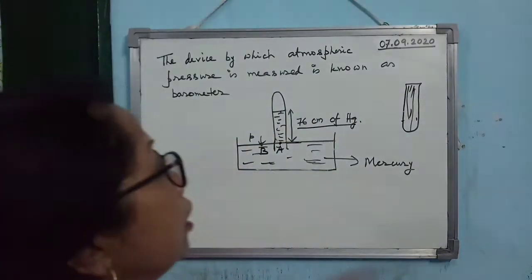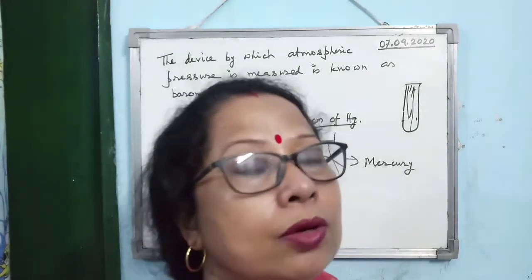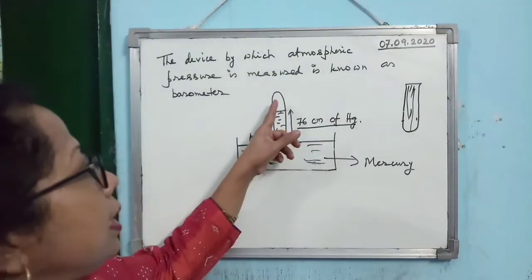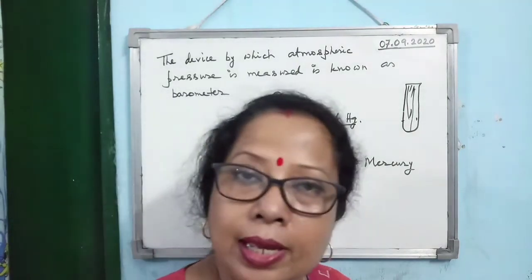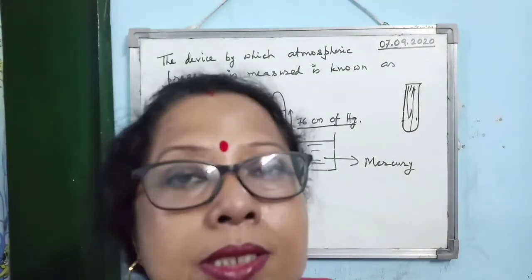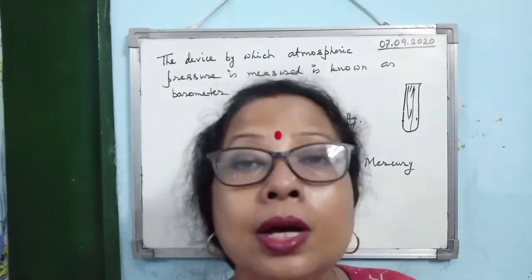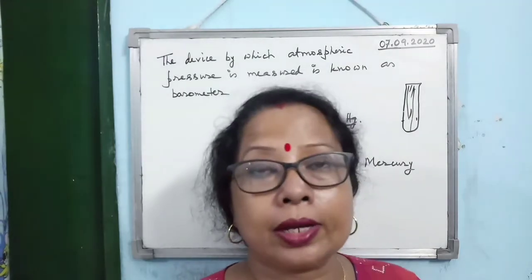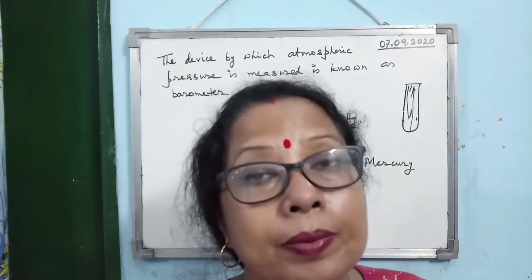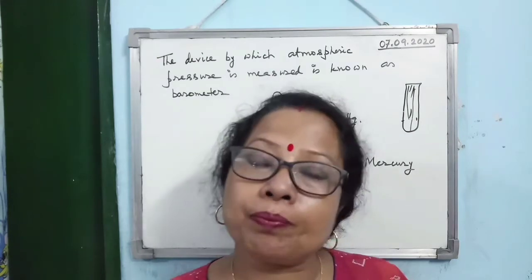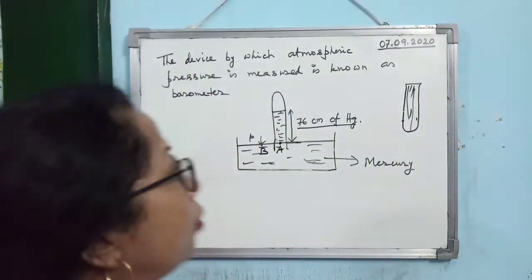Remember, Torricelli's vacuum is not a perfect vacuum — a little bit of mercury vapour is present in it. This is the third important point about the barometer.